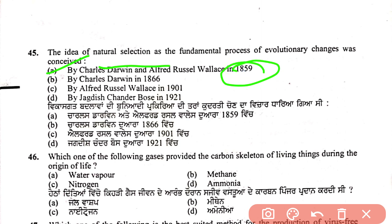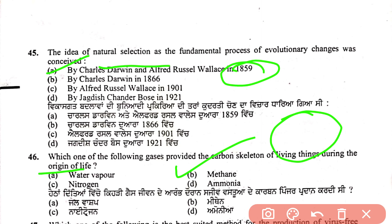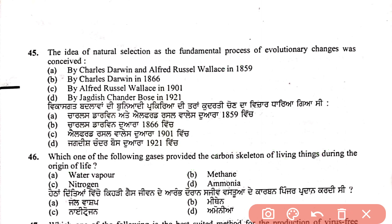Question 46: which gas provided the carbon skeleton of living things during the origin of life? The answer is methane — methane was the first gas that provided the carbon skeleton to living organisms during the origin of life.